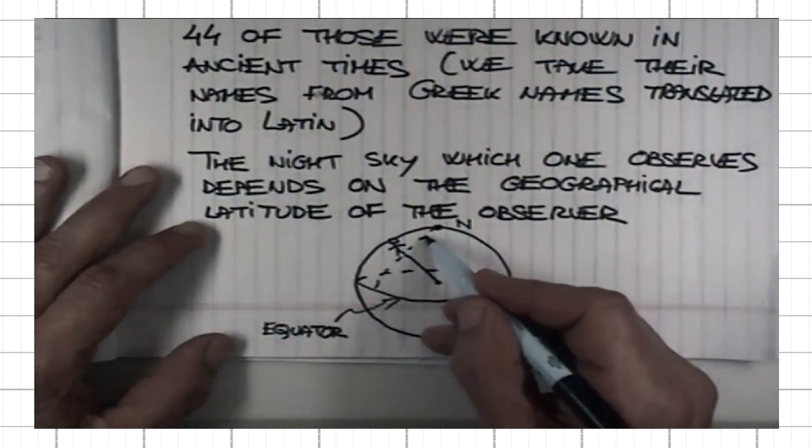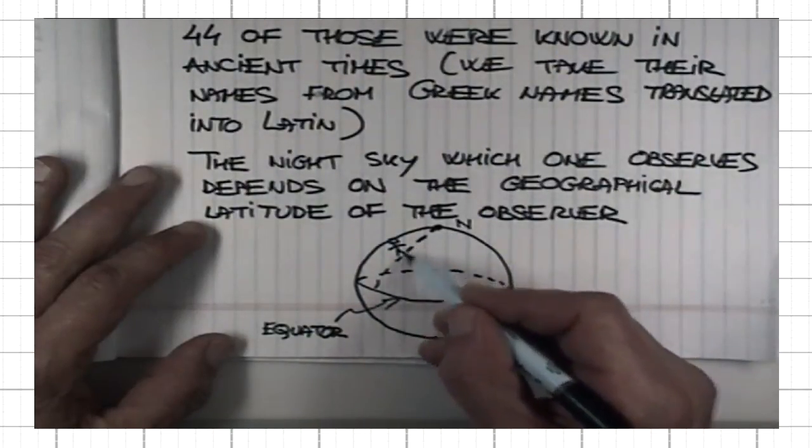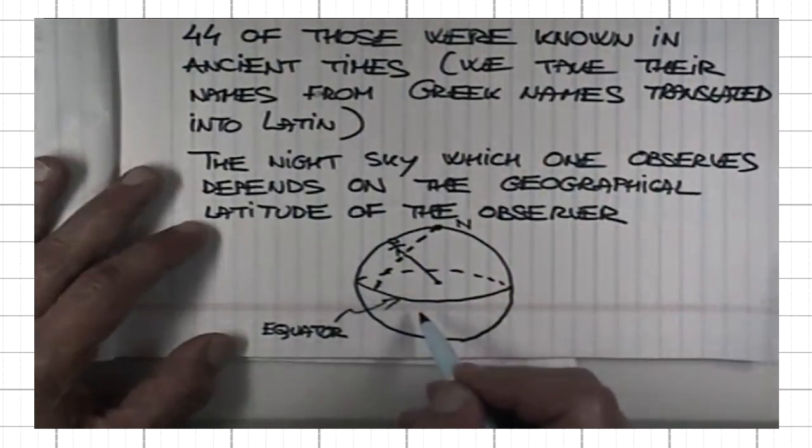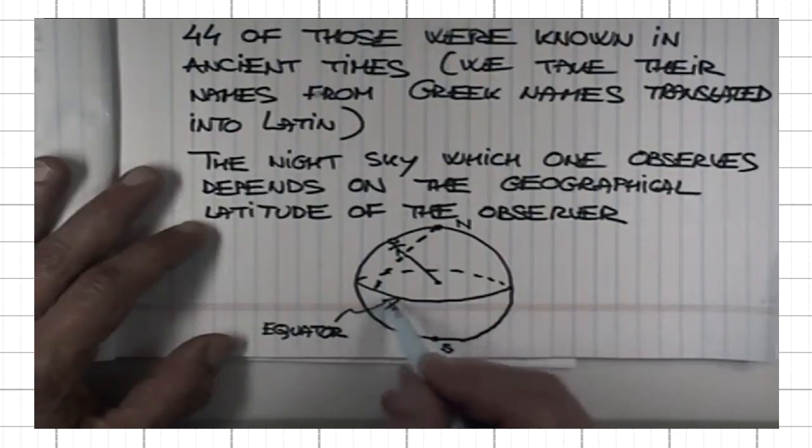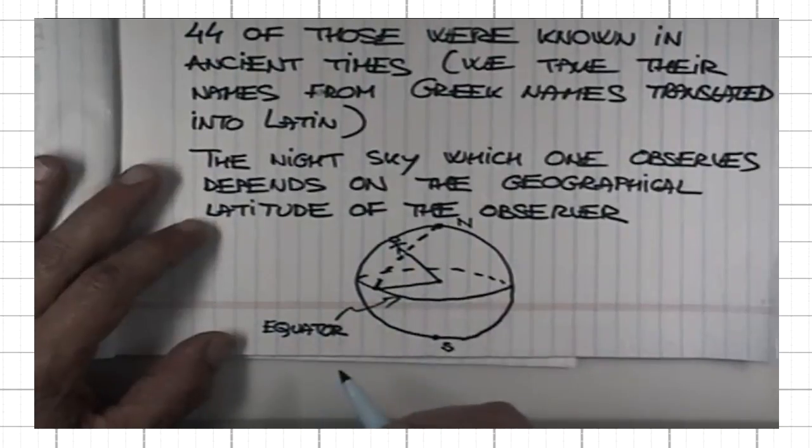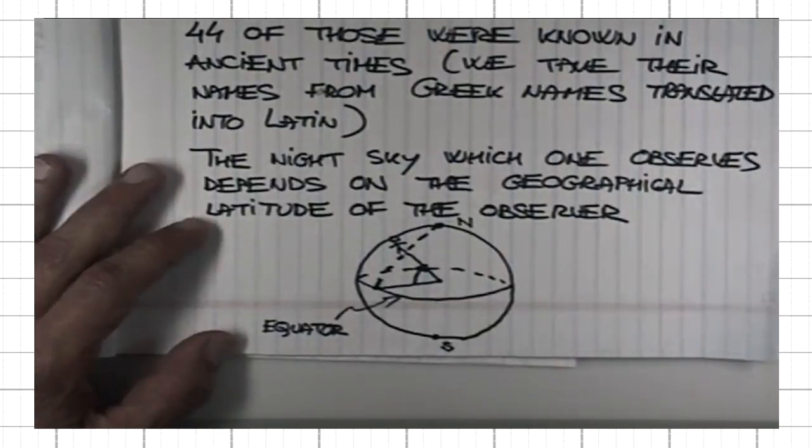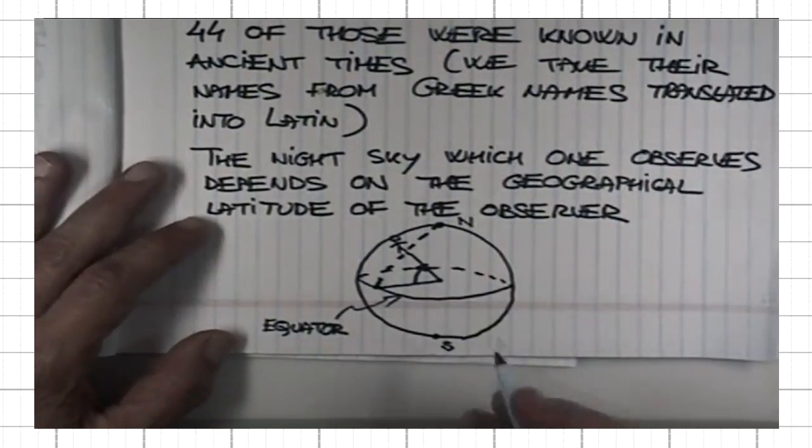Then I draw a meridian, which is part of the big circle passing through the observer, and it cuts the equatorial line at this point here. I connect that point with the center of the Earth. This angle here is what we call latitude angle.